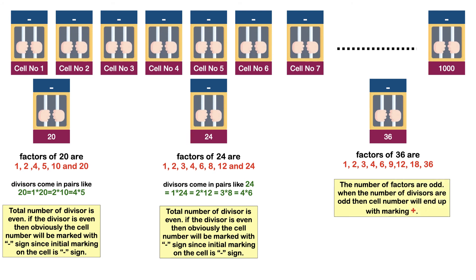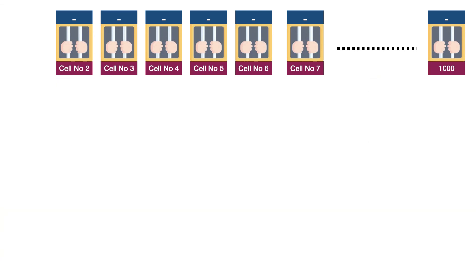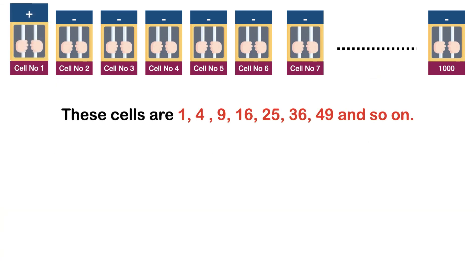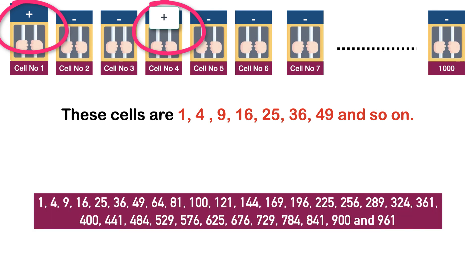Hence, the answer is all cell numbers that are perfect squares. So these cells are 1, 4, 9, 16, 25, 36, 49, and so on. Here is the list of all cell numbers which will be marked plus on the 1001st day, and these cells will be opened on the same day.